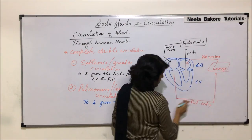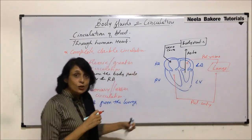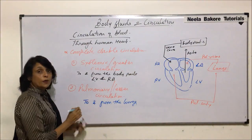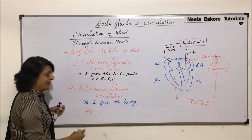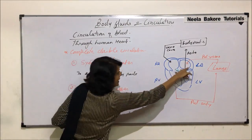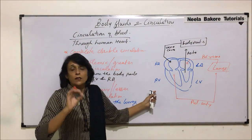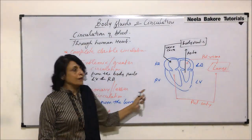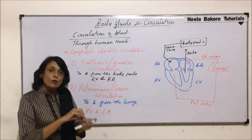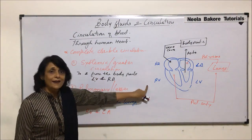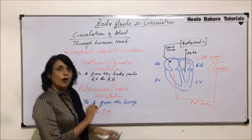So the deoxygenated blood goes to the lungs and oxygenated blood comes back into the heart. The compartments that help in pulmonary circulation are the right ventricle and the left auricle. We can represent the same flow as a flowchart to understand the circulation more clearly.